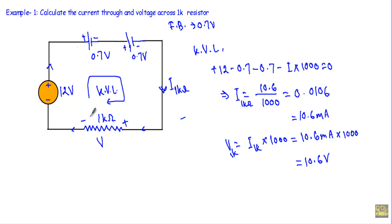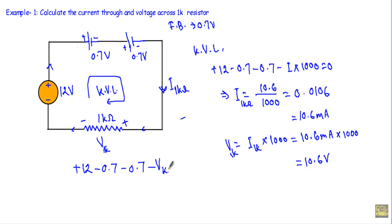I can also calculate the voltage drop across the 1kΩ resistor directly using KVL. Denoting that voltage as V_1k, applying KVL gives: +12 − 0.7 − 0.7 − V_1k = 0, so V_1k = 12 − 1.4 = 10.6 V. This confirms the voltage drop across the 1kΩ resistor is 10.6 V.